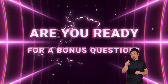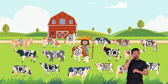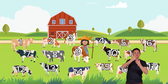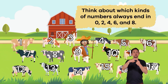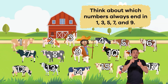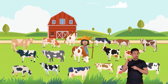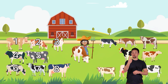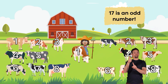Are you ready for a bonus question? Frankie needs our help one last time. She has 17 cows, and needs to know if 17 is an even or an odd number, so she can know where to let them graze. What do you think? Do you remember the important tips we shared with you earlier? Think about which kinds of numbers always end in 0, 2, 4, 6, and 8, and which numbers always end in 1, 3, 5, 7, or 9. Did that hint help? Can you divide the number 17 into 2 equal groups? Nope, there are 2 groups of 8 cows each, with 1 cow left over to wander the pasture alone. Which means that 17 is an odd number.